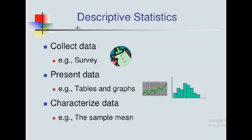When it comes to descriptive statistics, we use it in the following steps. First, to collect data — for example, to conduct a survey. Second, to present our data using tables and graphs. Third, to characterize data using sample statistics such as the sample mean.